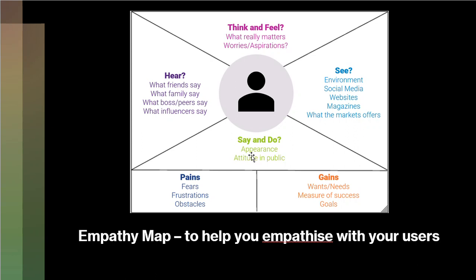What they Say and Do refers to how your users appear — their attitude in public. The Gains refer to their wants, their needs, their measure of success, and their goals. Pains of course include fears, frustrations, and obstacles.